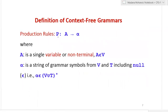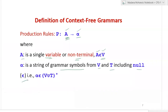The production rules of a CFG are of the form A → α. Here A is a single variable or non-terminal belonging to the set V — so the left-hand side contains only a single variable. Whereas α, the right-hand side, is a string of grammar symbols from variables and terminals, including null (epsilon or lambda). That is, α belongs to (V ∪ T)*, which includes null. In a normal grammar, the left-hand side was taken from (V ∪ T)+, which excludes null, whereas in CFG the left-hand side is a single variable.